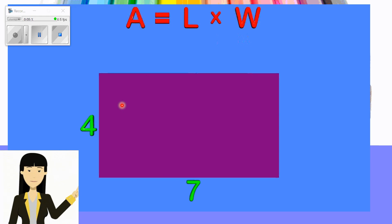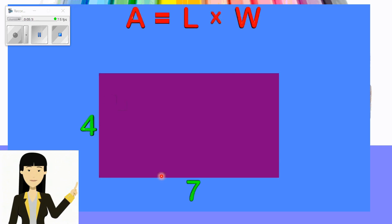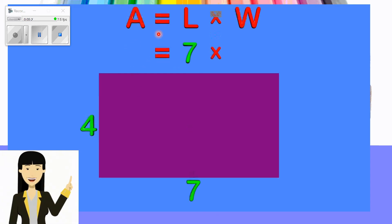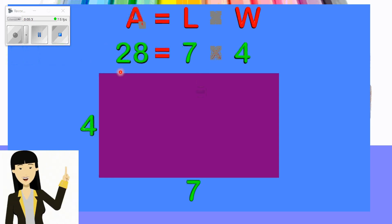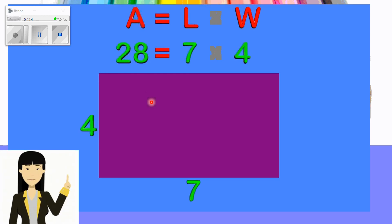If I have a rectangle but without a grid to show how many squares are inside, I just have the length and the width. I find the area using the formula: area equals L times W. Here, L is seven and W is four, so seven times four equals 28 square units. You have to include 'square unit' when you state the area.